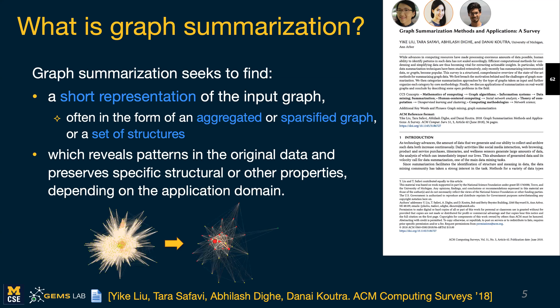Now exactly what it will preserve depends on the application domain and the requirements of the application. The representation can be in different forms. It could be an aggregated graph where nodes are aggregated together into super nodes — one visualization here at the bottom where the original graph is represented by a smaller network with big super nodes connected by super edges. Or it could be a sparser version of the original graph or even just a set of structures, like interesting subgraphs in the graph.